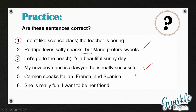And in the last one: 'She is really fun, I want to be her friend.' We have two independent clauses connected by a comma, so this is a comma splice. We can change this to a semicolon, or add a conjunction — for example: 'She is really fun, so I want to be her friend.' You could also add a semicolon or change this into two sentences — it's up to you.